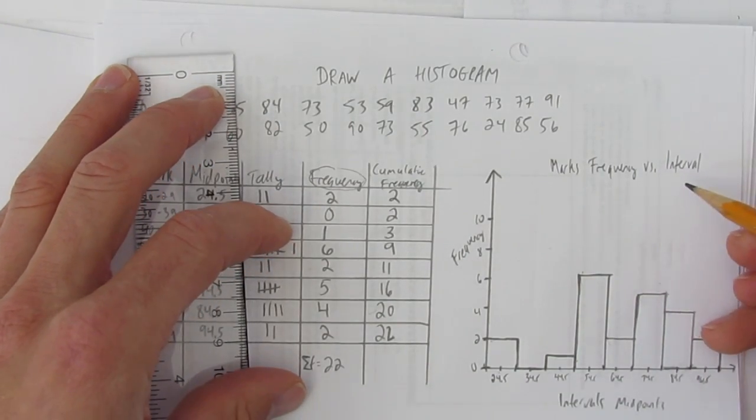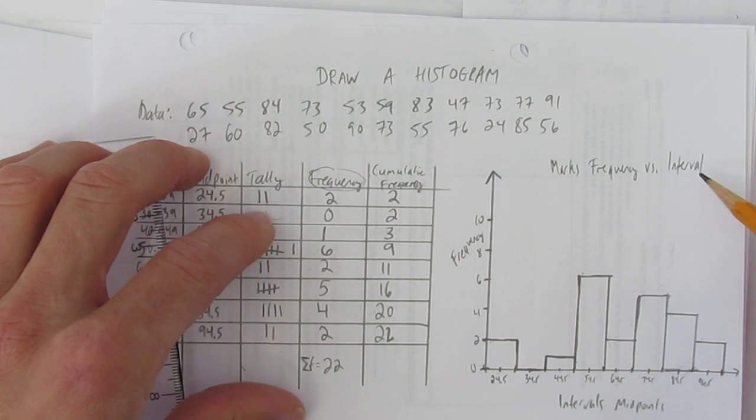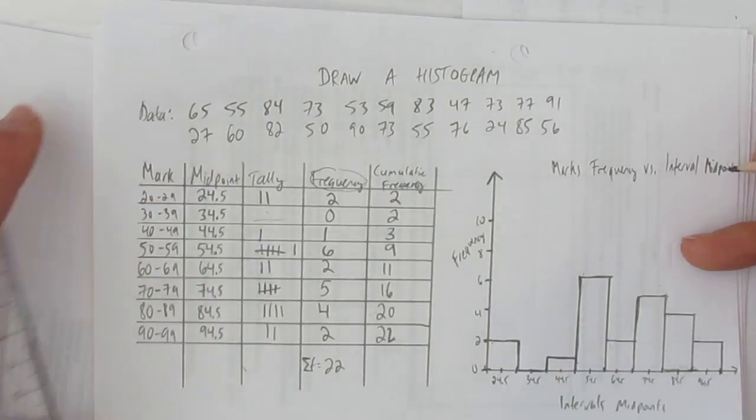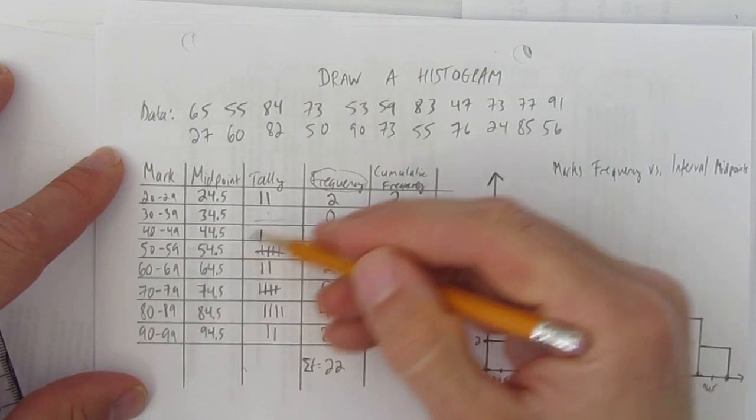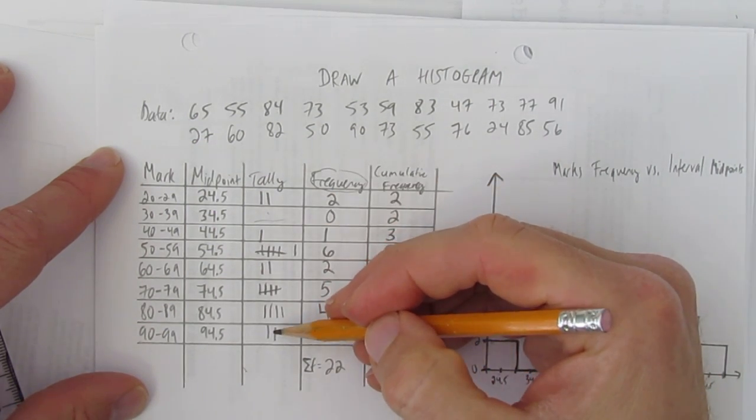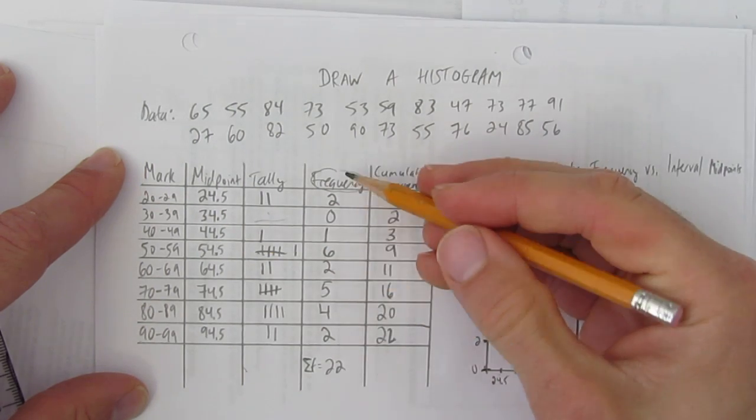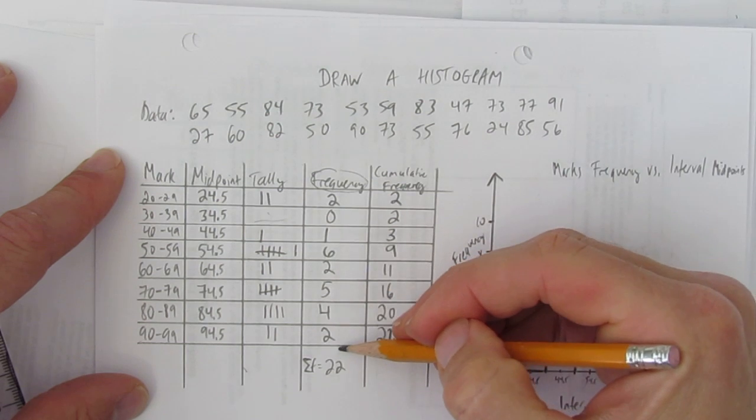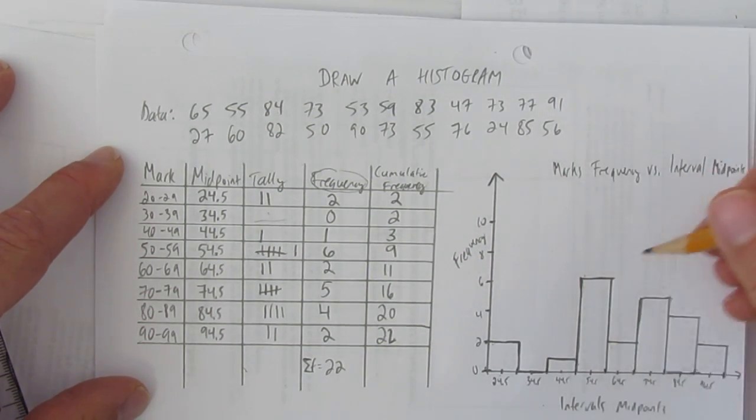A frequency histogram. Or a histogram using frequency versus the interval. And I should probably write interval midpoints. What did I do? Found the midpoints by taking the average of the intervals. Tallied up each thing that's in each interval or for each midpoint. And then counted the frequency of the tallies. Just counted how many I had of each. And then plotted the count of each interval midpoint on a histogram.